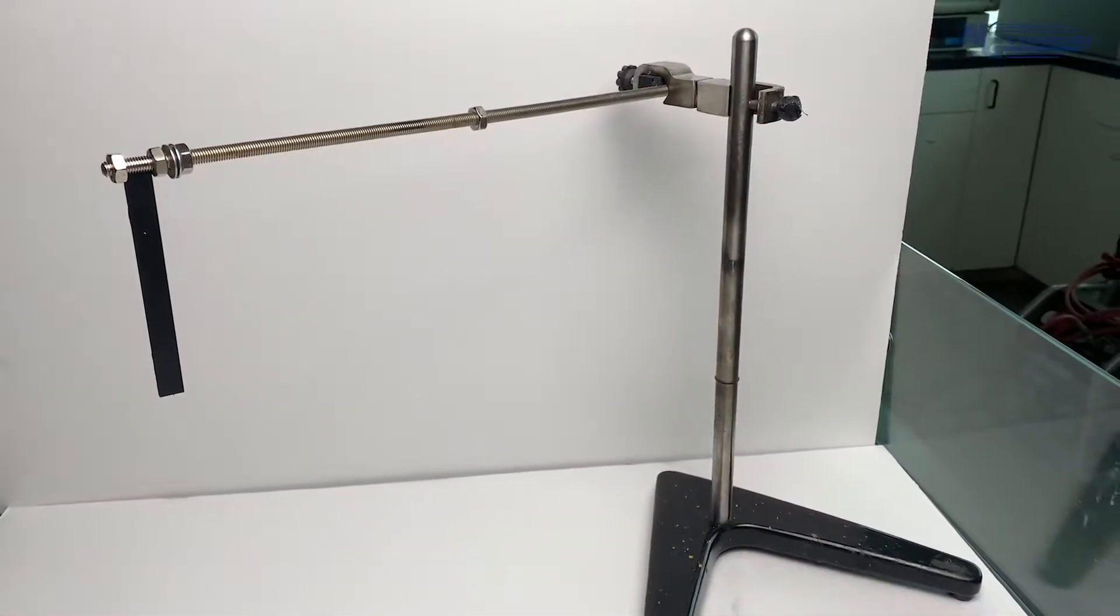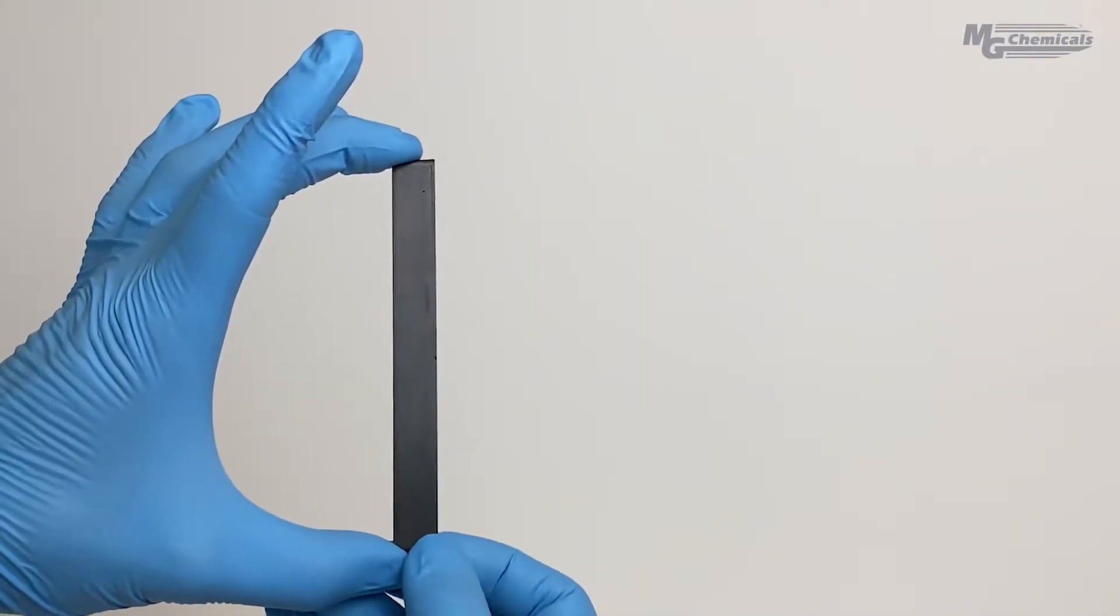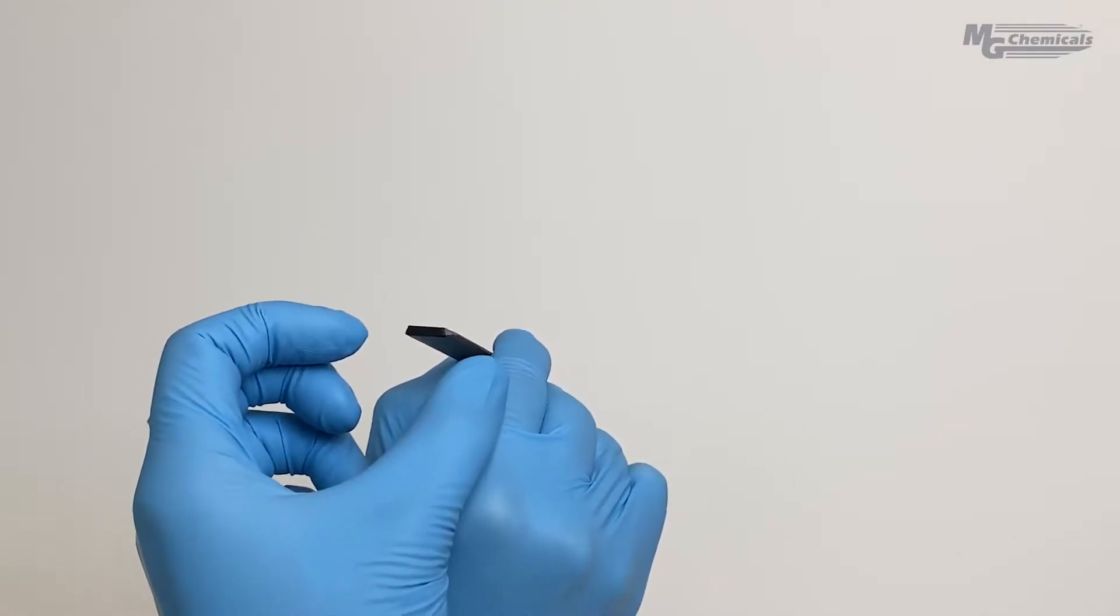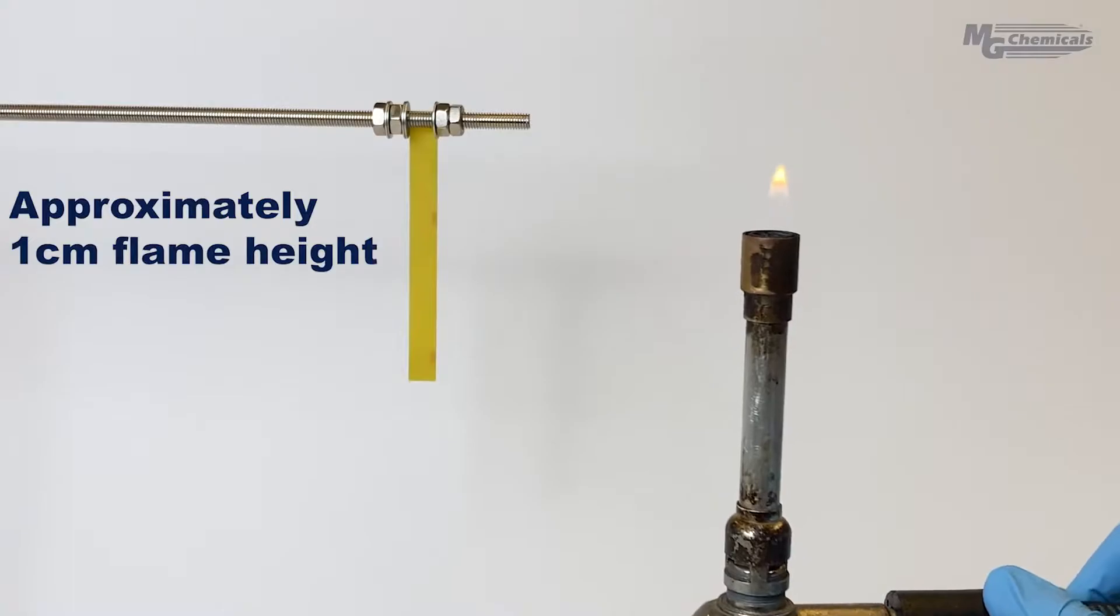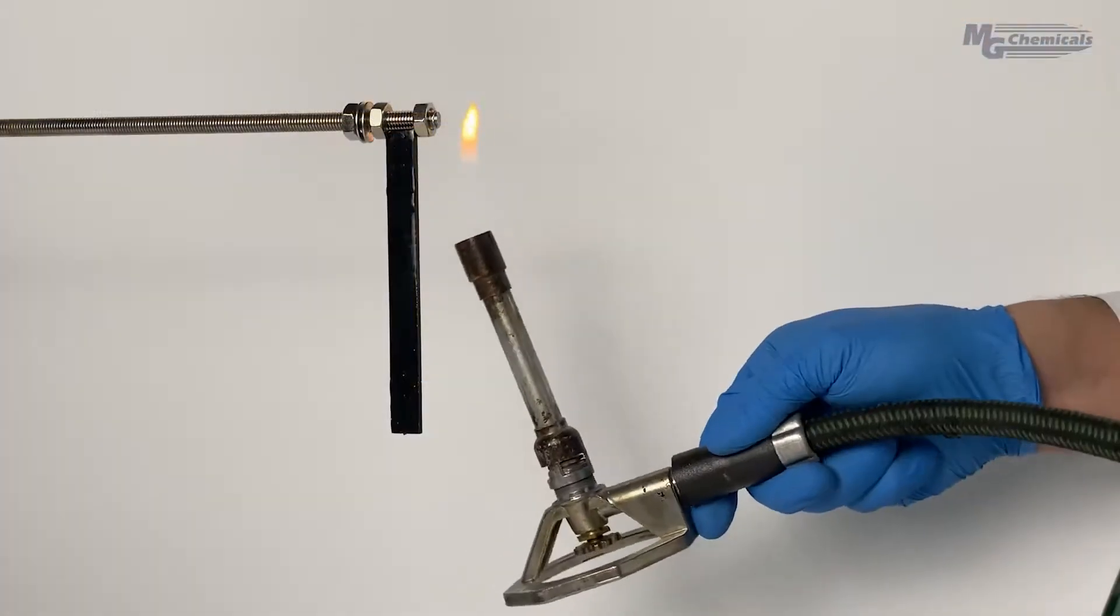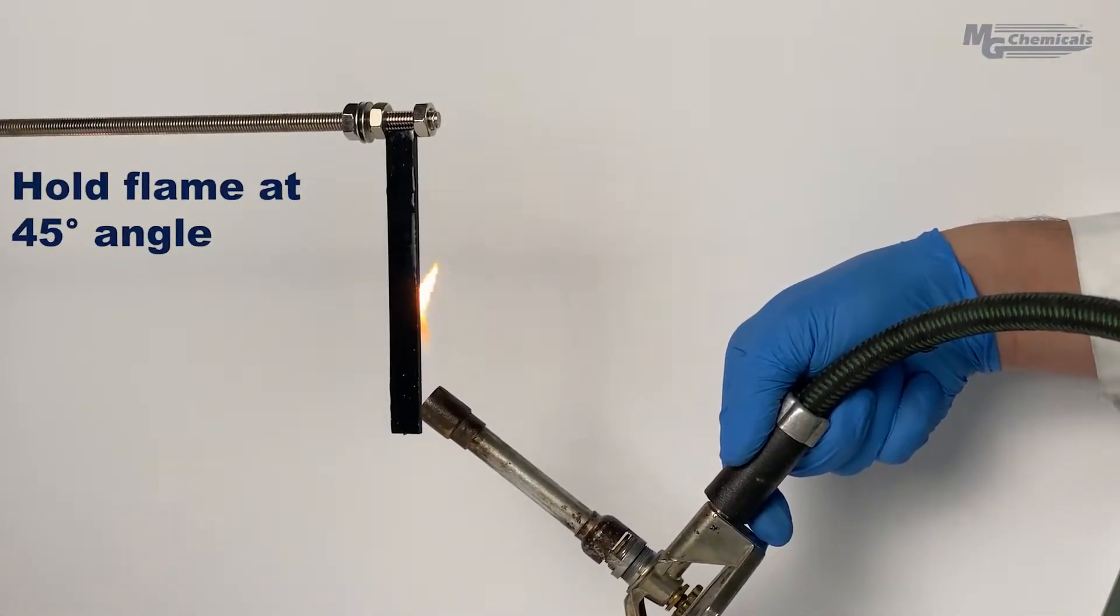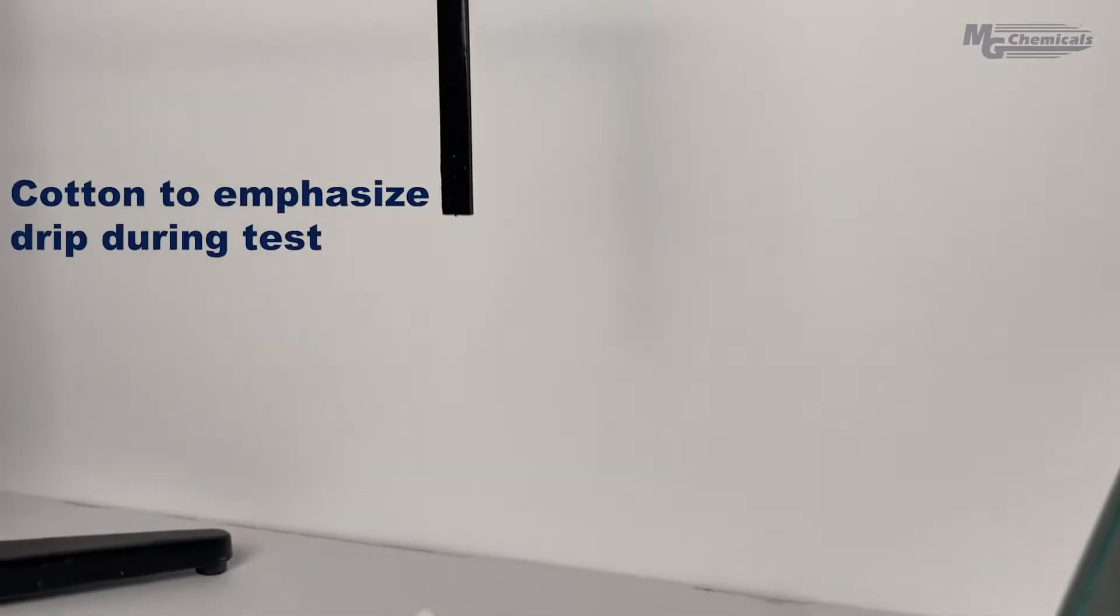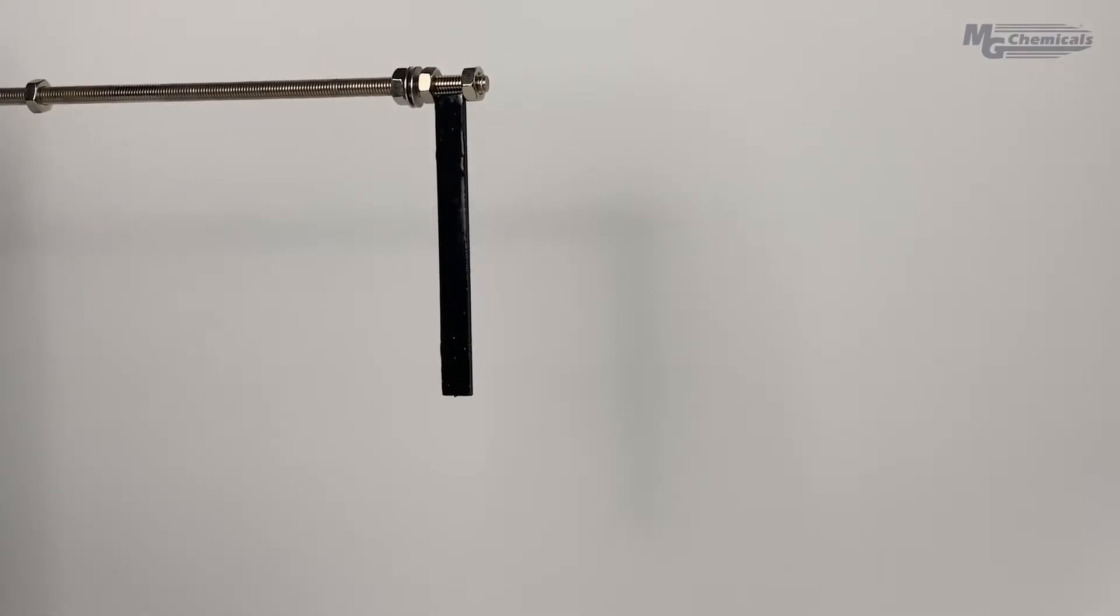Let's start by looking at the test setup for the vertical burn test. With potting and adhesive compounds, we prepare samples and strips that measure 125 millimeters long and 13 millimeters wide. Using a Bunsen burner, a flame approximately one centimeter high is lit, and with the strip suspended vertically, the flame is put into contact with the strip at a 45 degree angle. Cotton balls are placed at the base of the apparatus as a way to detect whether particles from the sample drip.